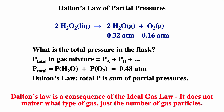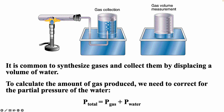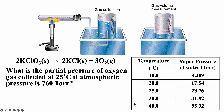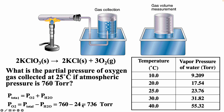Often in experiments you collect gas over water. The pressure inside the collection flask is due to both the collected gas and water vapor. So the partial pressure of the oxygen collected equals the total pressure minus the vapor pressure of water. For example, if atmospheric pressure is 760 torr and water vapor pressure at 20°C is 23.76 torr, then the partial pressure of oxygen = 760 − 23.76 torr.